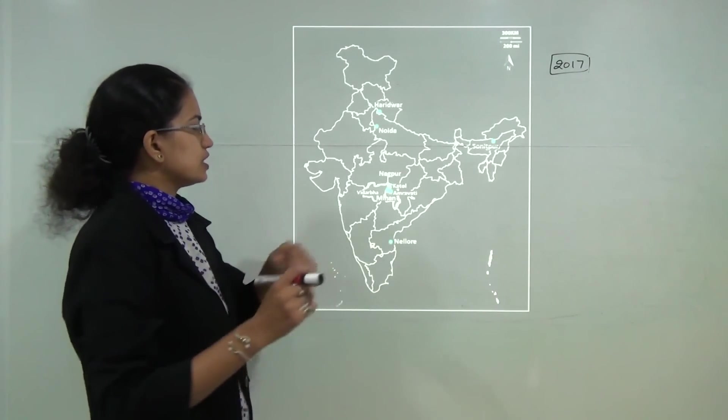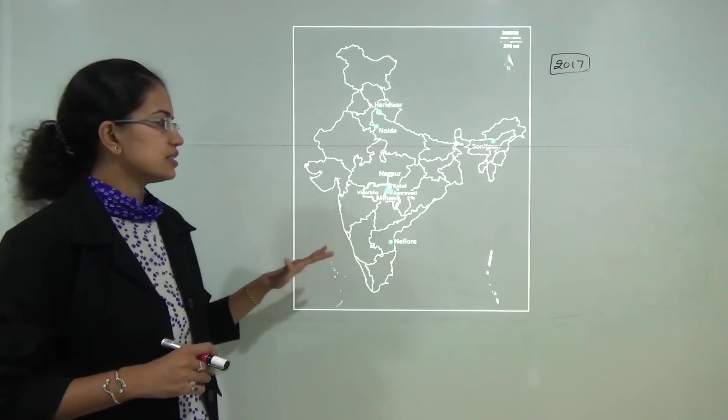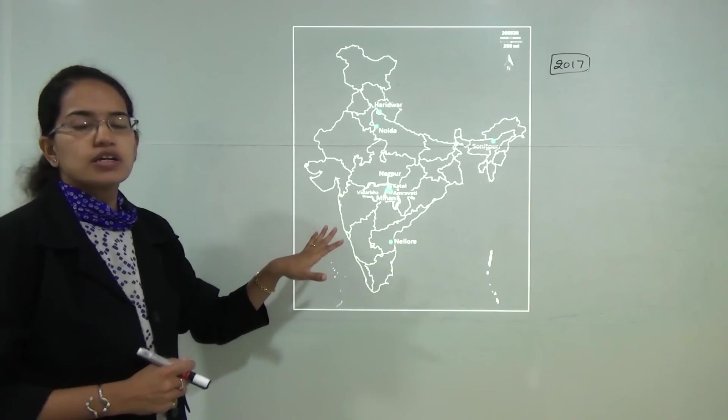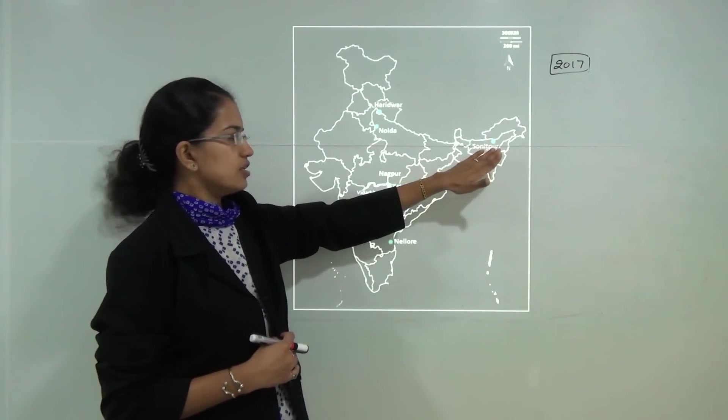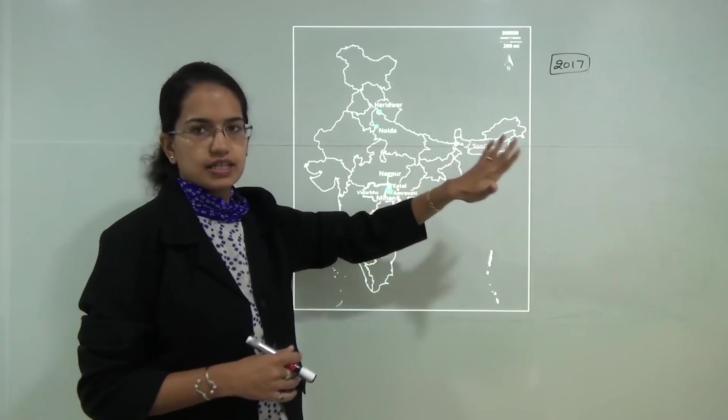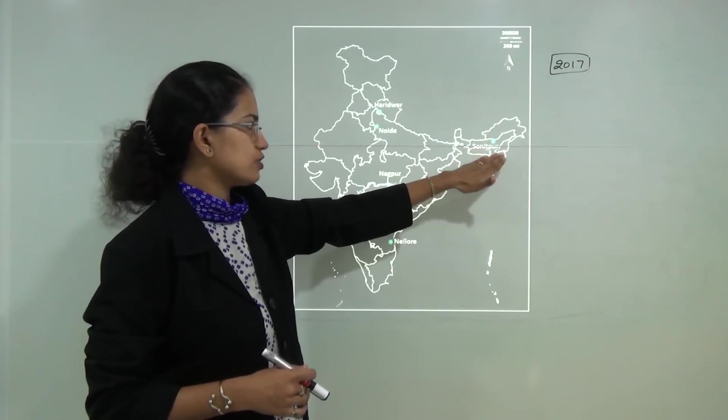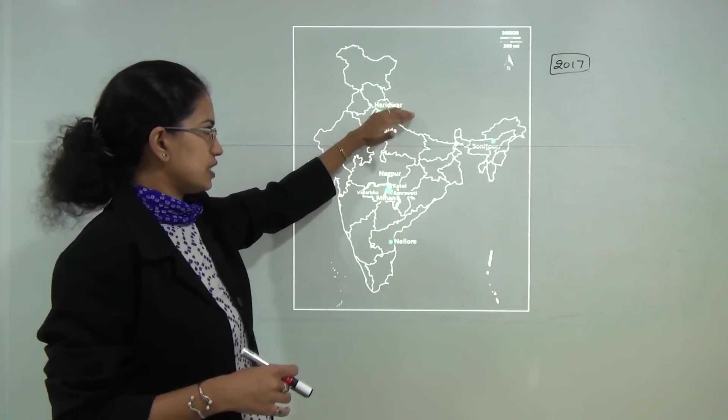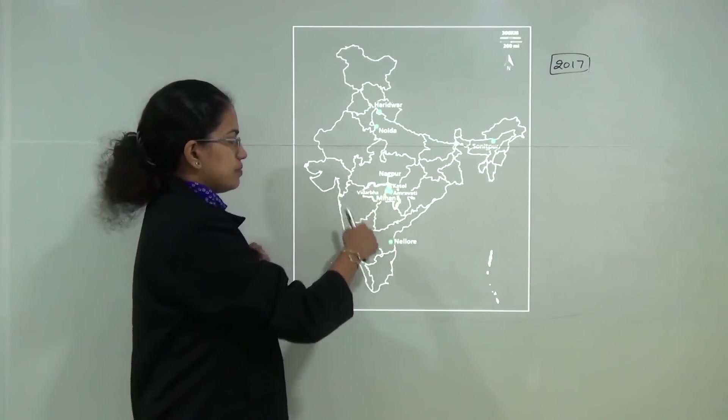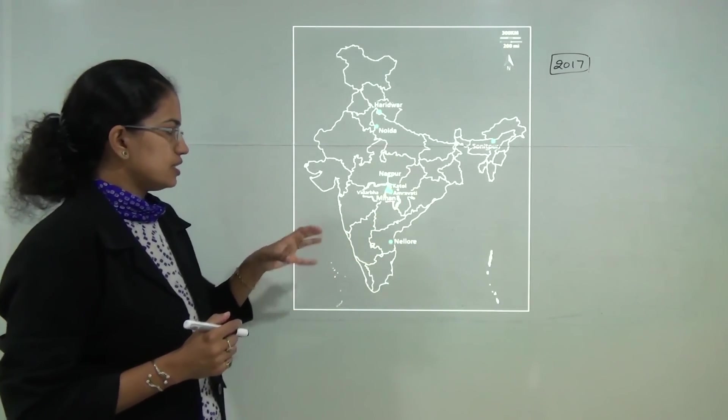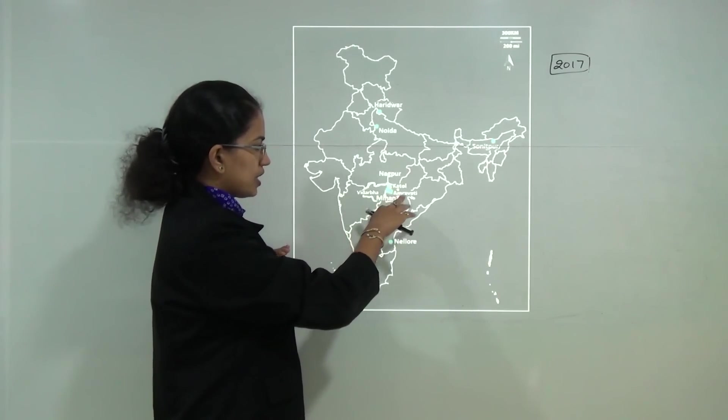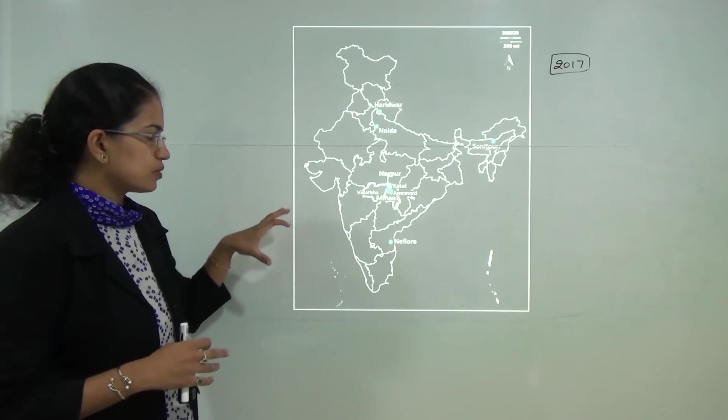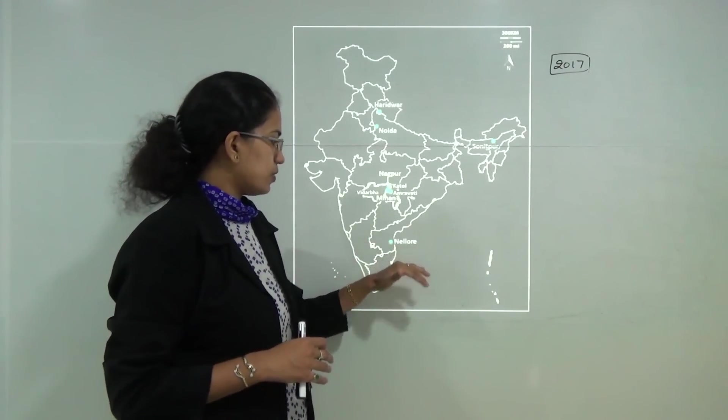These are the major Patanjali food parks that are established and that are proposed to be established for 2017. Sonitpur food park by Patanjali, the Baba Ramdev foundation, has already started in Assam. Then, you have the main headquarters at Haridwar. You have Noida. Then, there is Meehan national park in Nagpur area. You have Amravati, Katul and a place in Vidarbha that would be picked up as another food park for Patanjali. The next is Nellore in Andhra Pradesh.